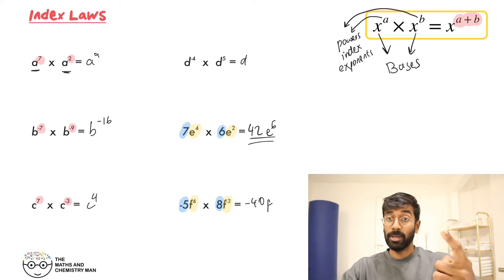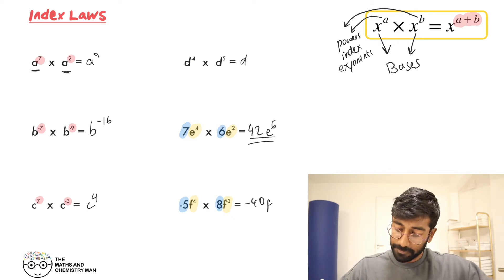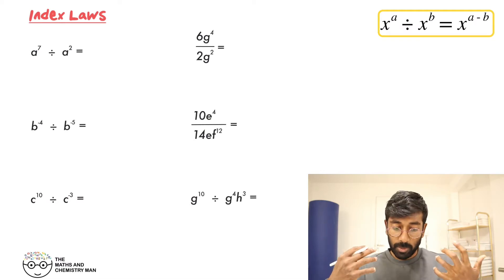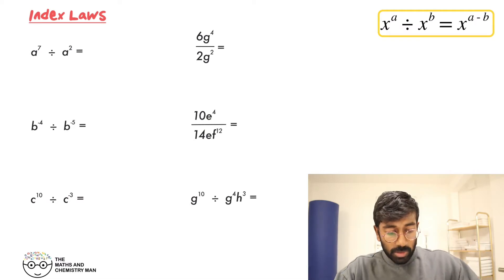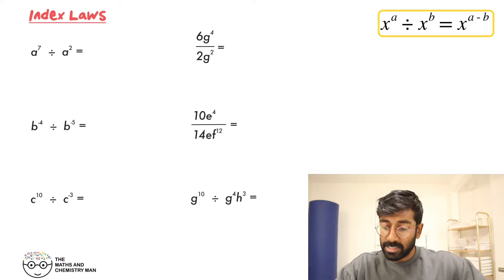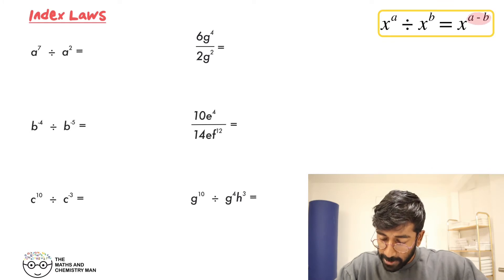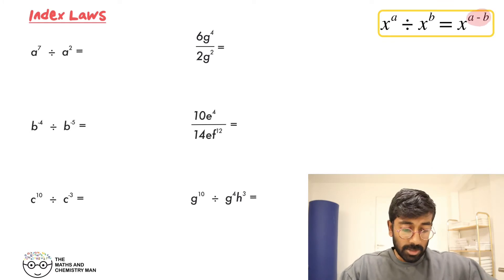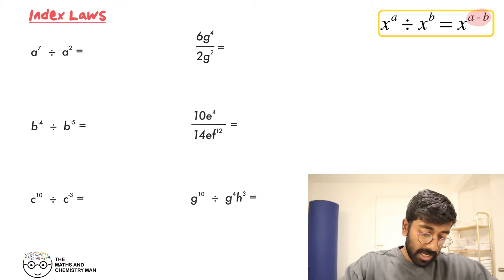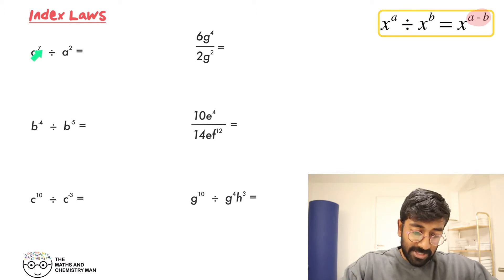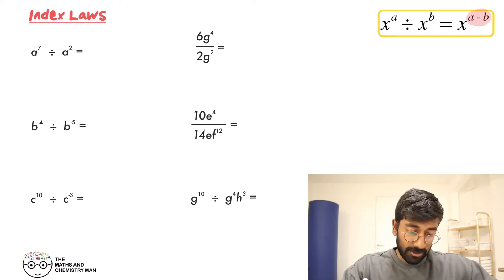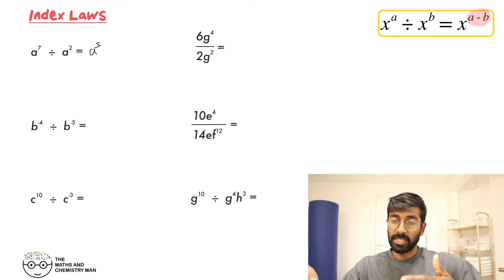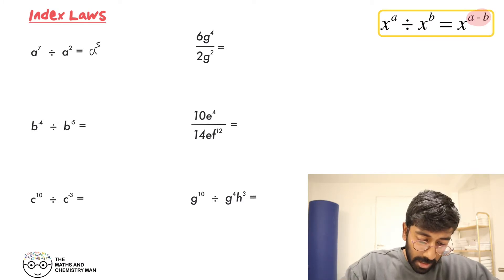Next, what do we do when we're dividing? When we're dividing, we want to subtract our indices. So let's get straight into it: A to the power of 7 divided by A to the power of 2 — that's A to the power of 5, because you do 7 take away 2.